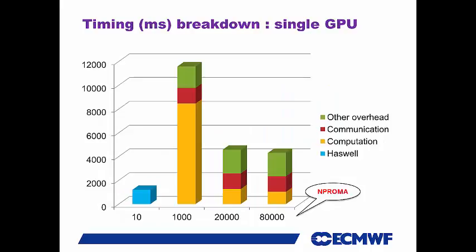Looking at the timing breakdown on a single GPU: Haswell gives the total time with no communication overhead. With N-proma 1,000, the yellowish bar is computational time, the reddish one is communication time, and then there's some other overhead — OpenACC memory pinning, data present testing — which I can't precisely identify. Everything above the yellow bar is overhead. There is perhaps some overlapping of data communication and computation, but I don't distinguish it here.